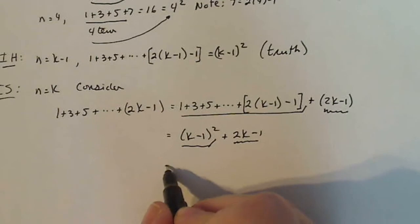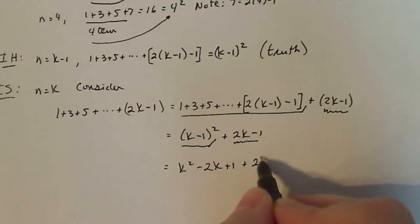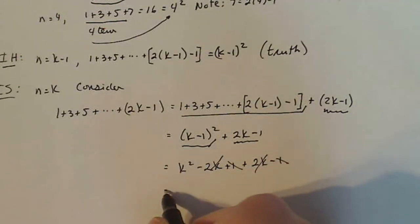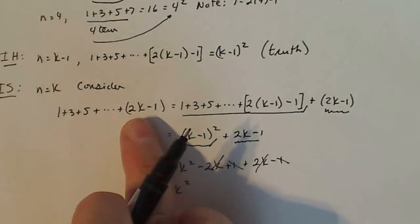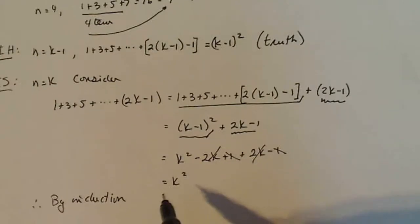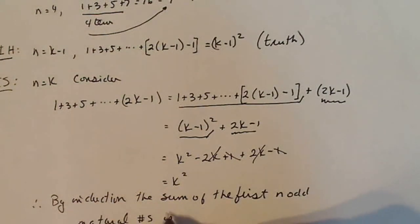This part here, I'm just going to simplify. I have k squared minus 2k plus 1 plus 2k minus 1. And look at the beautifulness of this. The 2k's cancel. The 1's cancel. And I'm left with k squared. So I've just proven it. I proved that the first k odd integers added up is k squared. So therefore, by induction, I can say the sum of the first n odd natural numbers is n squared.